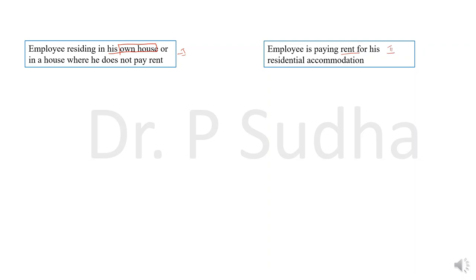Let us take the first situation: how to calculate taxable HRA when the employee is staying in his own house. The entire amount of HRA is taxable. If the employee is staying in his own house and he is not paying rent, then the entire amount that he is receiving as HRA is taxable.